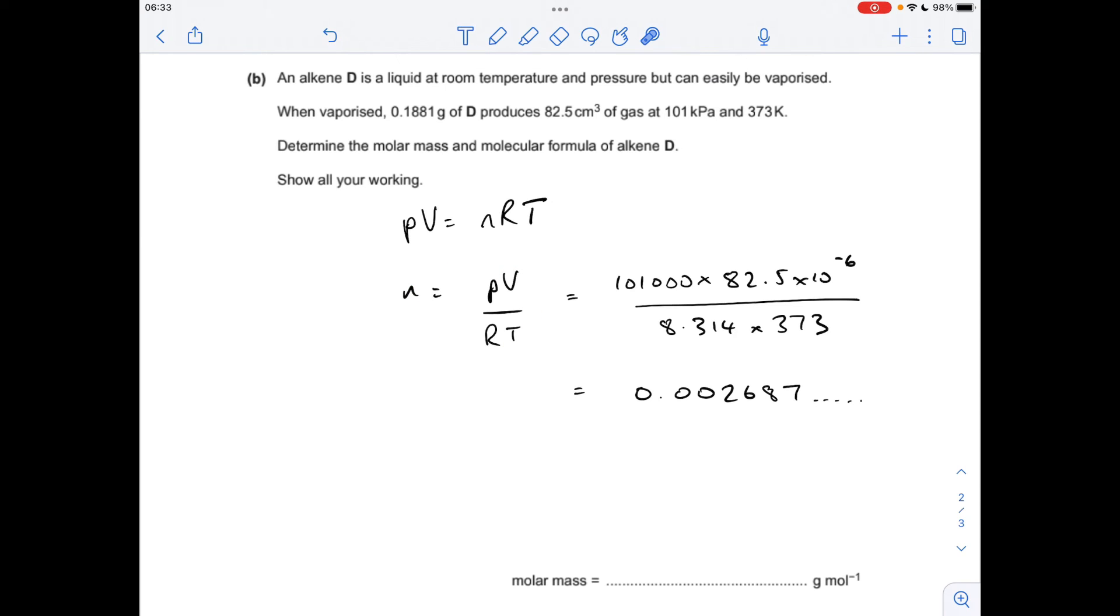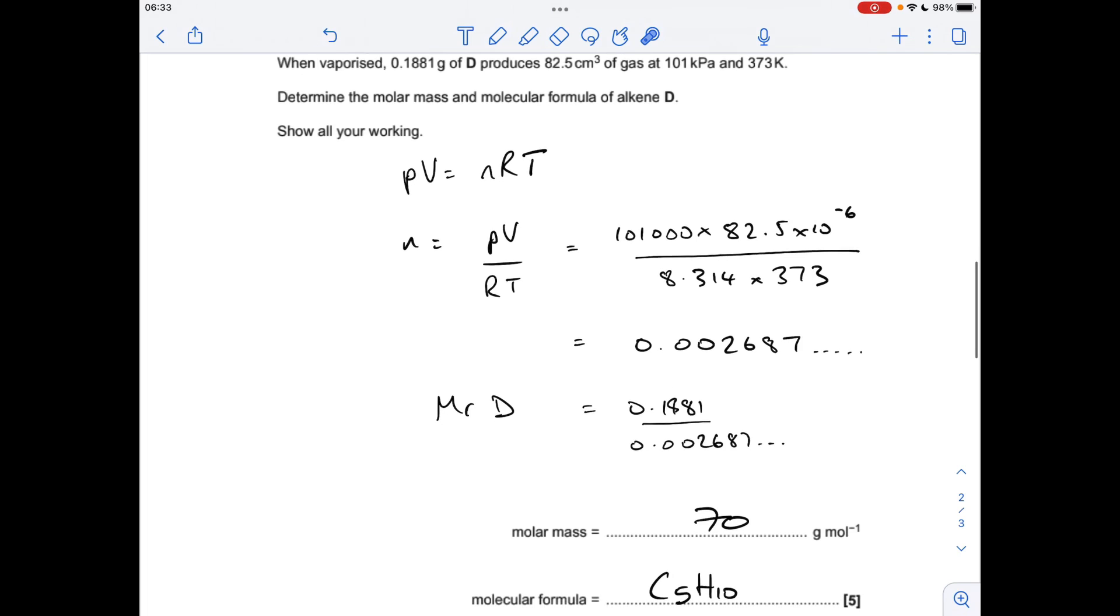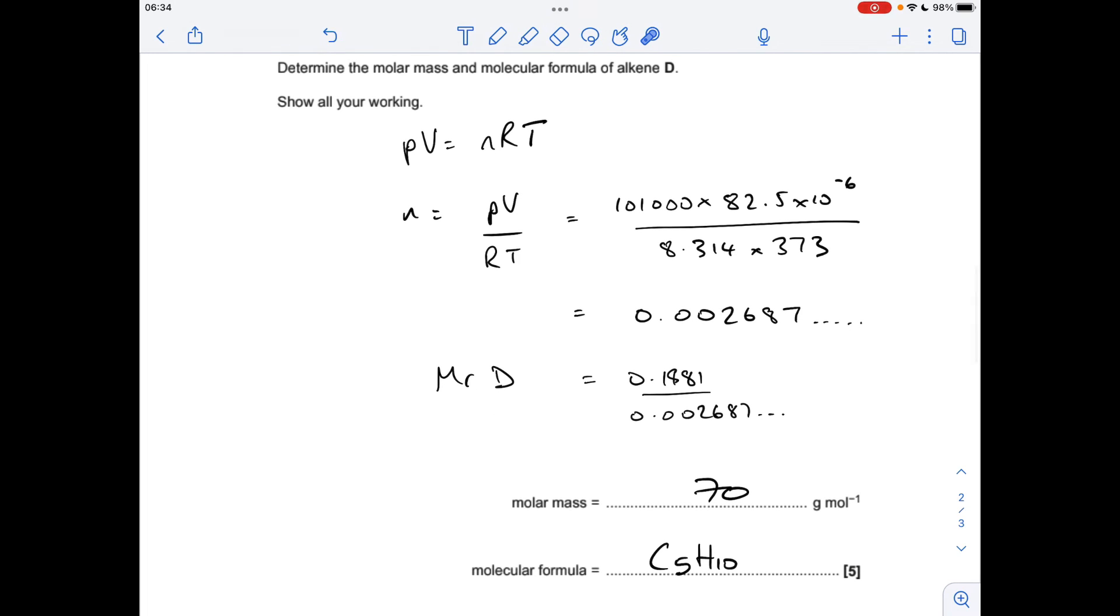So we rearrange for n, and put the numbers in. We've got a pressure of 101,000 pascals, got to work in pascals for the ideal gas equation. And the volume, it's been given in centimetres cubed, it's got to be in metres cubed for the ideal gas equation. So I'll just put a 10 to the minus 6 after the centimetres cubed value, and that converts it to metres cubed. Divided by the gas constant times the temperature in Kelvin, which is already given in Kelvin. So the calculated value comes out at that, so the MR mass over moles comes out at 70, which makes the molecular formula C5H10.